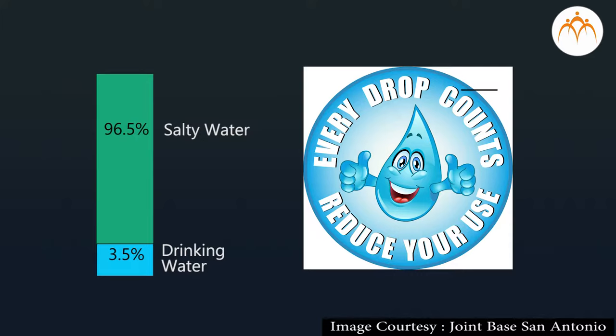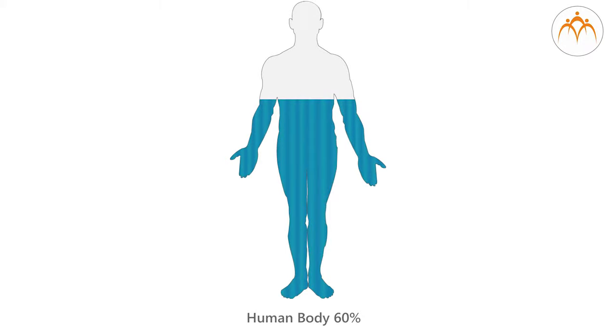As you can see, drinking water available to us is very little, so we should use this natural resource sparingly. Do you know how much water is present in the human body? About 60% of the human adult body contains water.